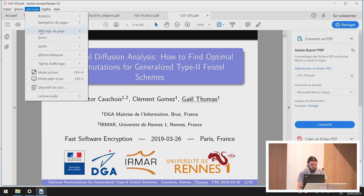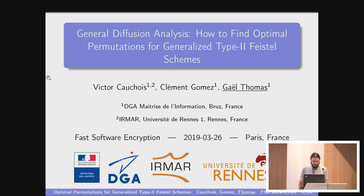How to Find Optimal Permutations for Generalized Type II Feistel Schemes. This is joint work between Victor Cauchois, Clément Gomez, and Gael Thomas. Gael will give the talk. This paper wins the runner-up award for the longest title. There is tomorrow one paper with one character more in the title, but you almost won. Thank you for the introduction.